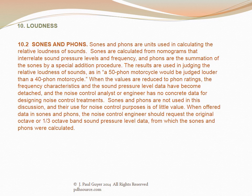Sones and phons are units used in calculating the relative loudness of sounds. Sones are calculated from nomographs interrelating sound pressure levels and frequency; phons are the summation of sones using a special addition procedure. However, when values are reduced to phon ratings, the frequency characteristics and sound pressure level data are detached, leaving no concrete data for designing noise control treatments. Sones and phons are not used in this discussion; when offered such data, the noise control engineer should request the original octave or one-third octave band SPL data.